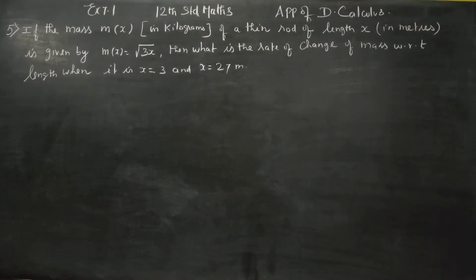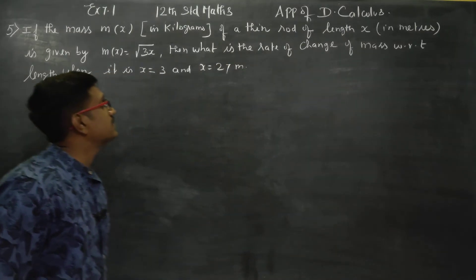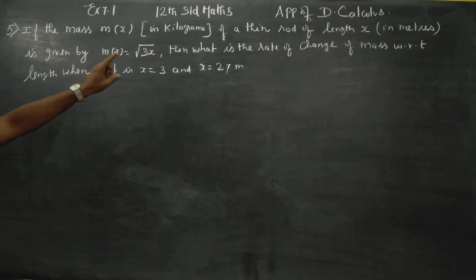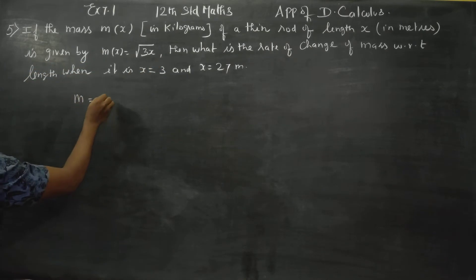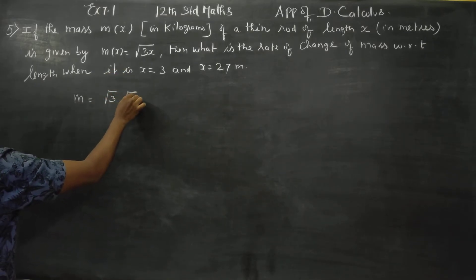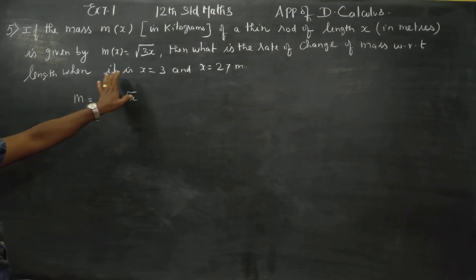Hello 12th standard students. In exercise number 7.1, applications of differential calculus: if the mass of a thin rod is given by m = √3 · √x, then what is the rate of change with respect to the length?